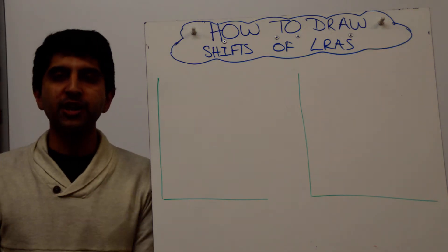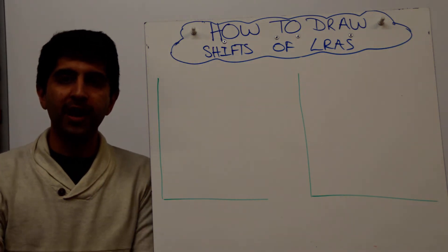Hi everybody! You want to show a shift to the right of LRAS. How do you do that?